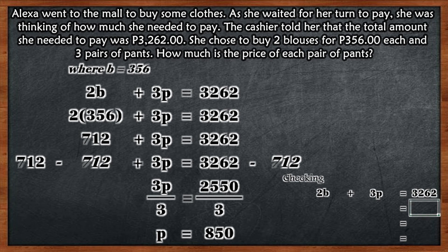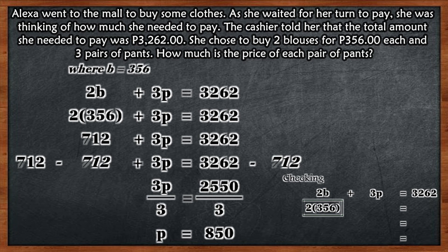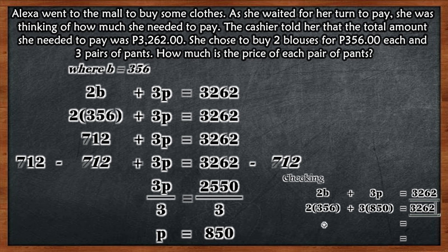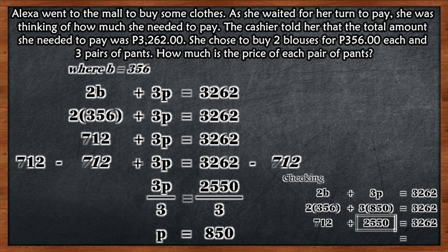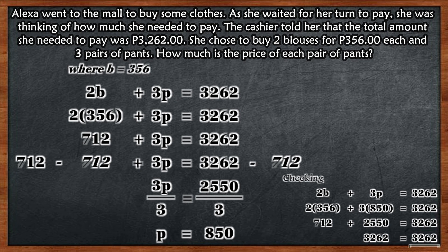To check the solution, substitute 356 for B and 850 for P: 2 times 356 is 712; 3 times 850 is 2,550; 712 plus 2,550 equals 3,262; 3,262 equals 3,262. Therefore, the solution is 850.